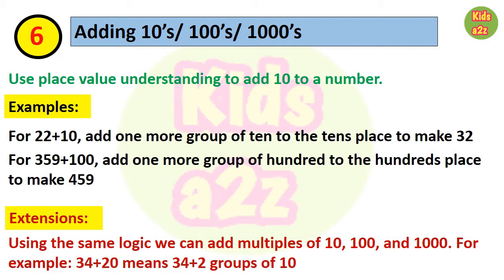Next strategy is adding 10s, 100s, or 1000s. We have to use place value understanding to add 10 to a number. For example, to add 22 plus 10, we need to add 1 more group of 10 to the tens place of 22. So the answer will be 3 tens plus 2 ones, that is 32.